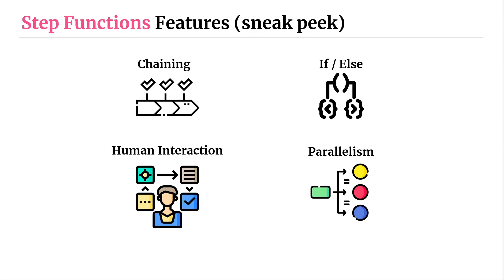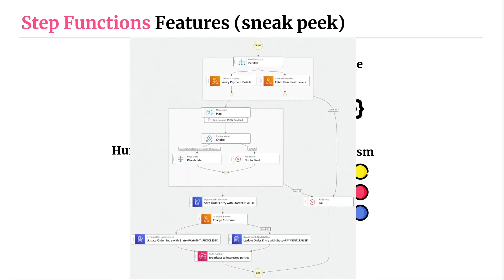In terms of an example of what a Step Function definition actually looks like, let me show you one. This is actually the Step Function flow we're going to be creating in the Practice Lab as part of this course — an order processing workflow. It starts at the top, and it was created entirely in Workflow Studio using the drag and drop interface. We have a parallel state — we want to do two things at once: verify the payment details of the order, and fetch the stock levels. If either of these calls fail, we want to immediately abort the Step Function.